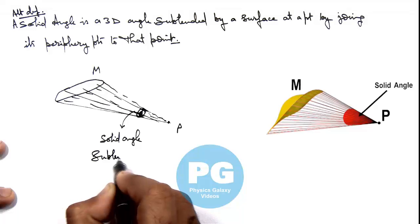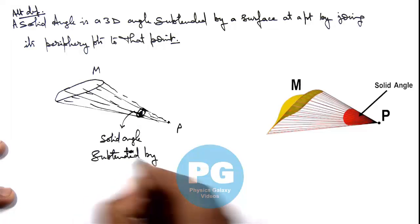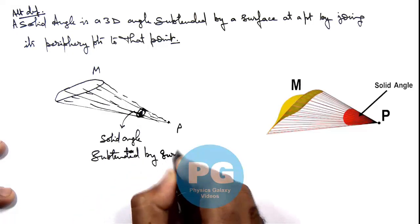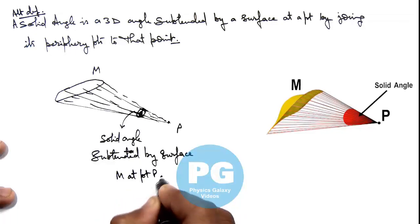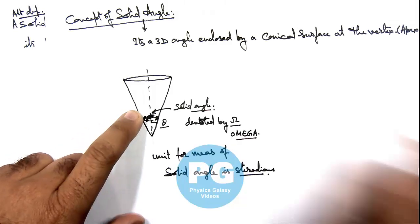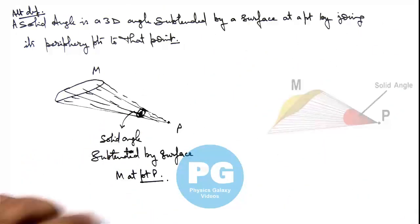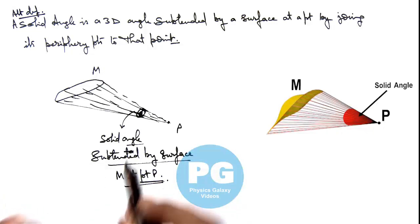Subtended by surface M at point P. So this is just a basic understanding of what exactly a solid angle is. It can be given as either the angle enclosed by a conical surface, or it is written as the angle subtended by a surface at any point in its surrounding.